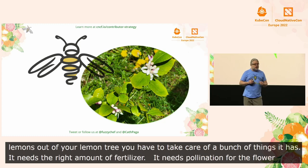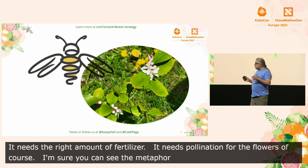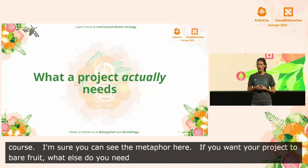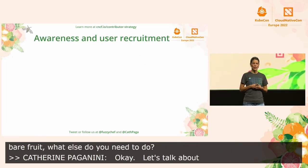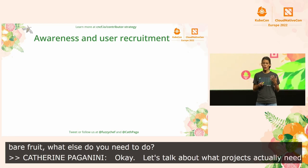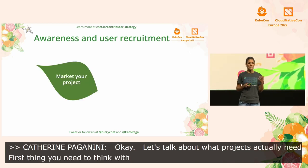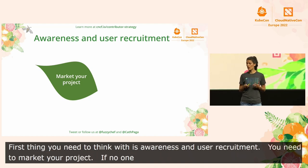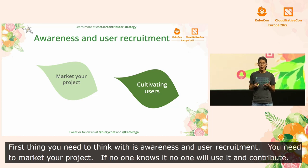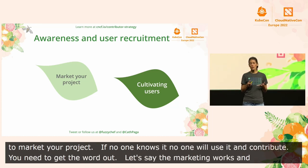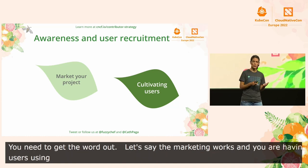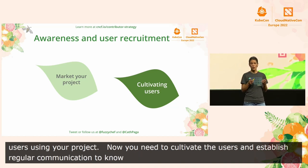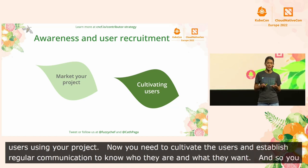I'm sure you can see the metaphor here. If you want your project to bear fruit, what else do you need to do? Let's talk about what projects actually need. First, you need to think about awareness and user recruitment — you need to market your project. If no one knows it, no one will use it, no one will contribute. Once marketing works and you have users, you need to cultivate them: establish regular communication so you understand who they are and what they want, get feedback for your roadmap, and identify who's interested in becoming a contributor.